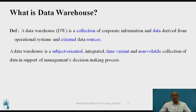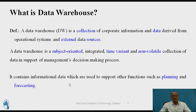The features of a Data Warehouse — there are four features. The first feature is subject-oriented, the second is integrated, the third is time variant, and the fourth one is non-volatile. All those features are used to make decisions.